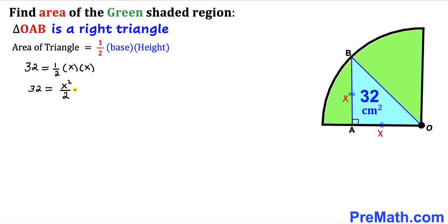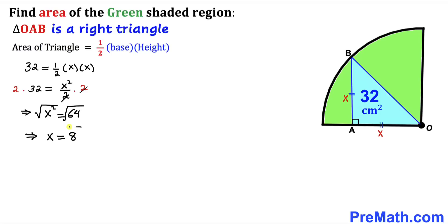Multiplying both sides by 2 to remove the fraction, we get x² = 64. Taking the square root on both sides, our x value turns out to be 8. So our base is 8 centimeters and likewise our height is 8 centimeters as well.